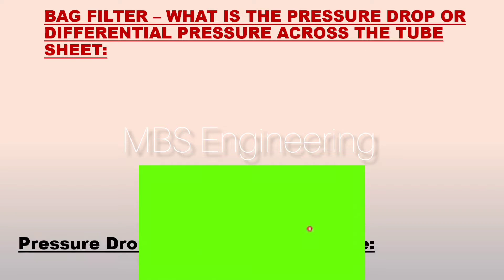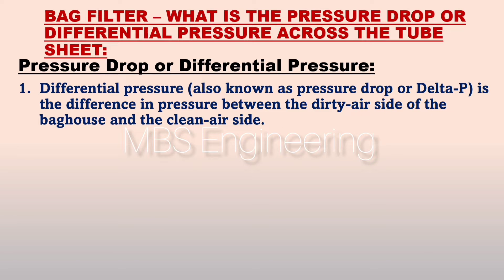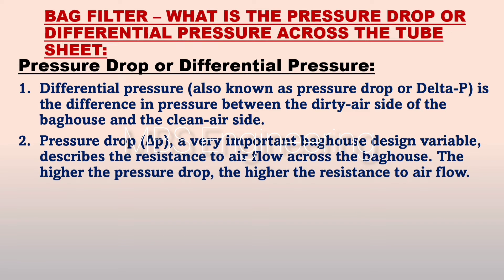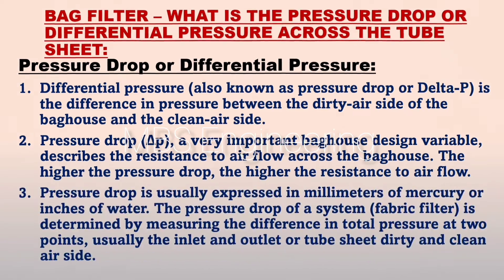Next, we are going to discuss what is the pressure drop or differential pressure across the tube sheet in the bag filter. Point number 1: differential pressure, also known as pressure drop or delta P, is the difference in pressure between the dirty air side of the baghouse and the clean air side.